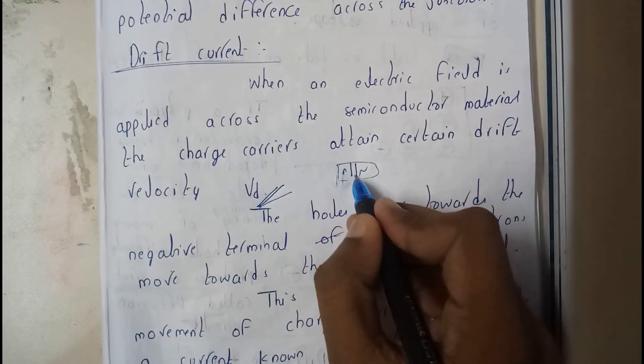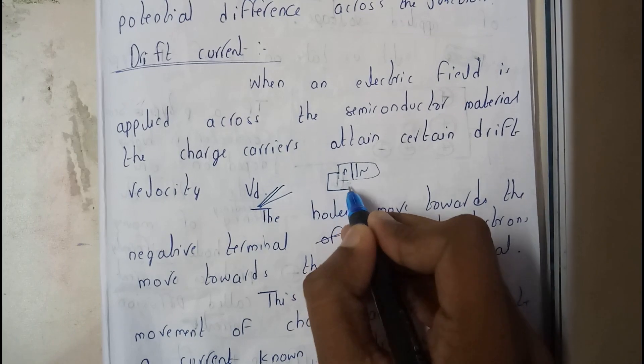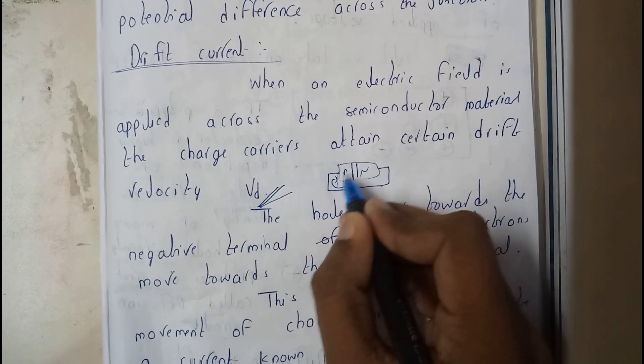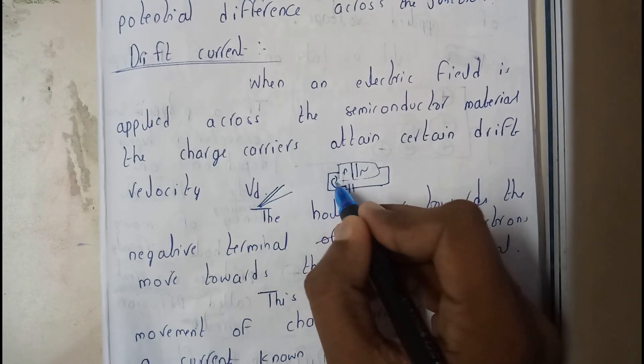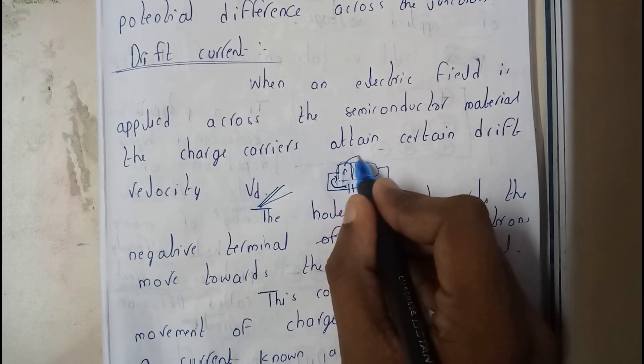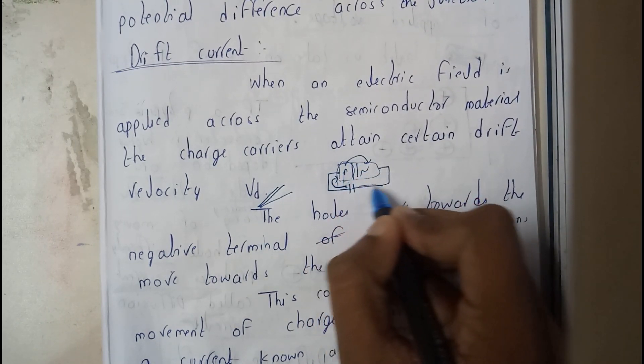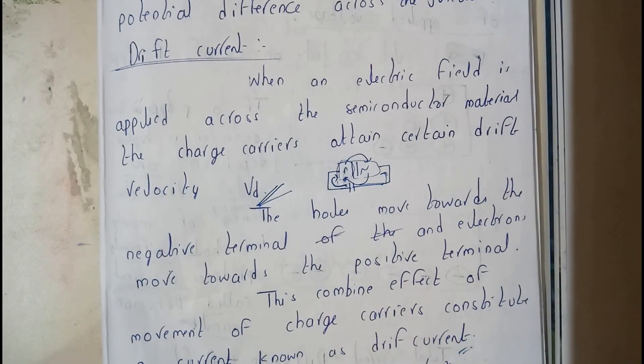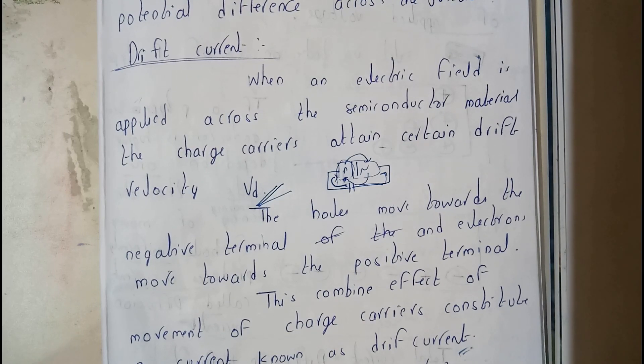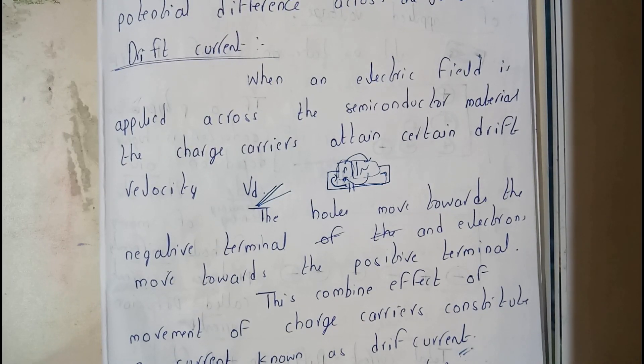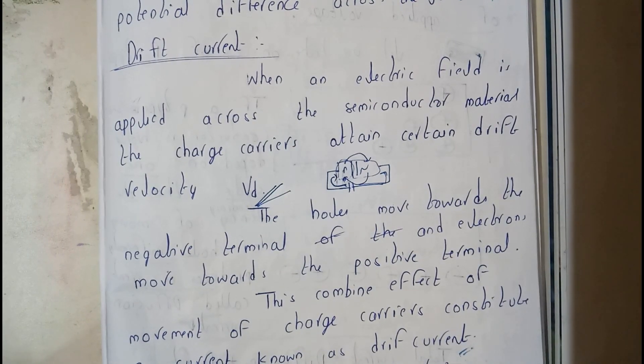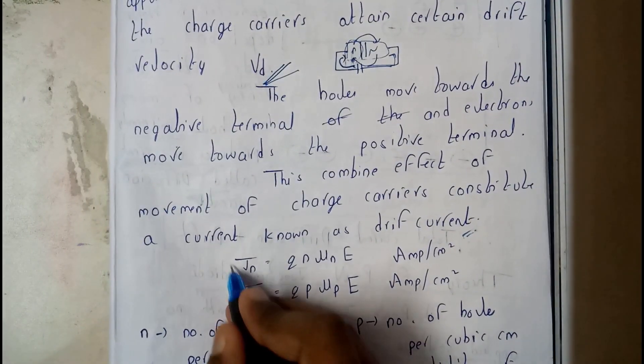The combined effect of movement of charge carriers constitutes a current known as drift current. When a P-type and N-type are kept together with a power supply, the voltage pushes P to N and N to P. The current required for this movement is called drift current.